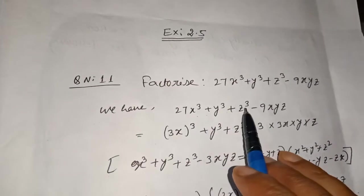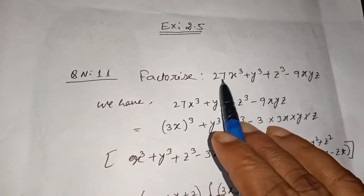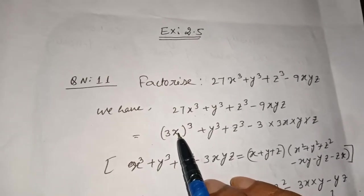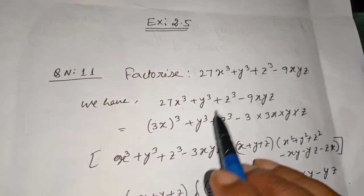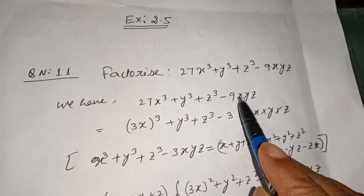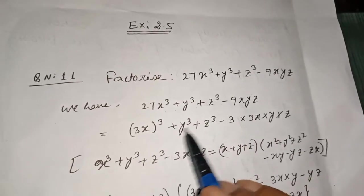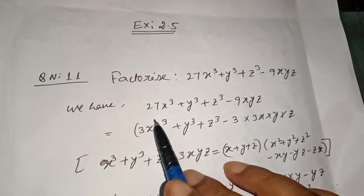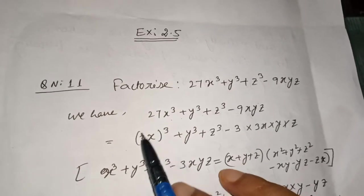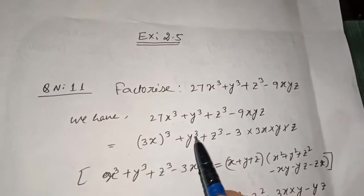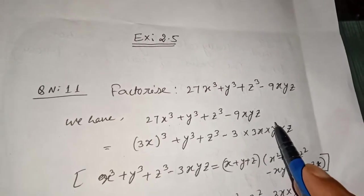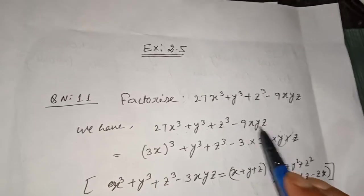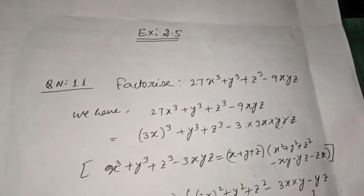We have 27x³ + y³ + z³ - 9xyz. Now 27x³ we can write as (3x)³, because if you multiply 3x three times you get 27x³. Then for 9xyz, we can write it as 3 × 3x × y × z, which balances to 3(3x)(y)(z).